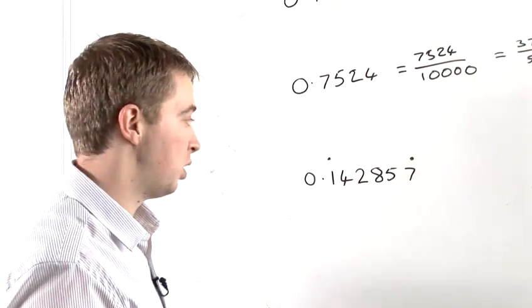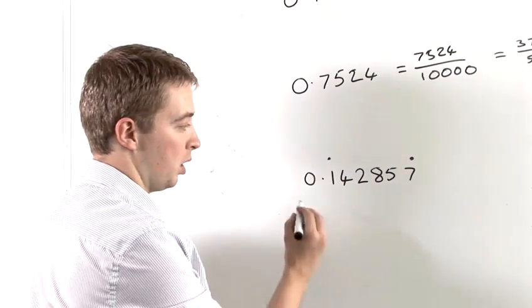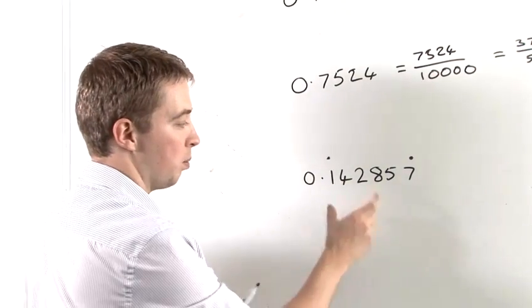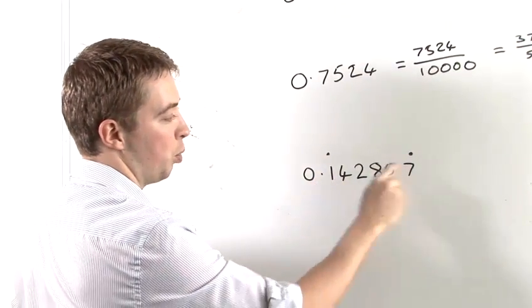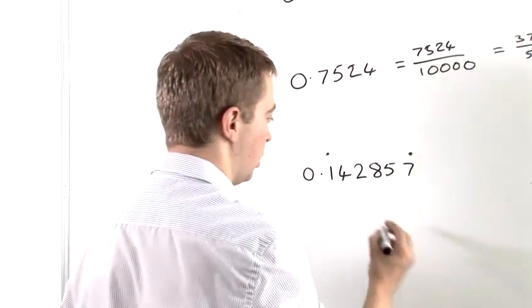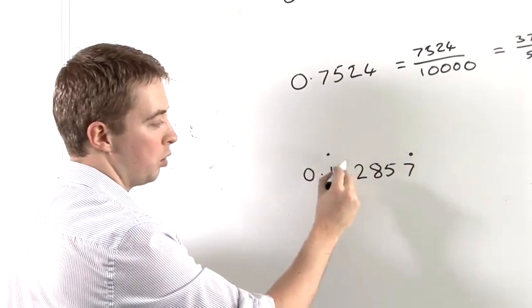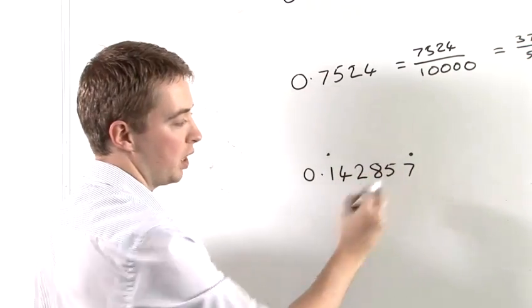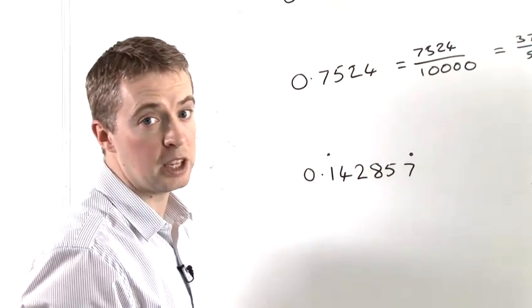Now the way to do that is to take this and in fact multiply it so that this decimal point comes after this 7 here. So we need the point to jump 1, 2, 3, 4, 5, 6 times. So we're going to have to multiply this by 1,000,000.